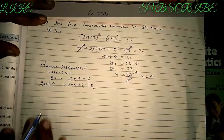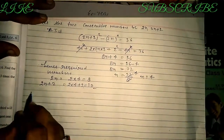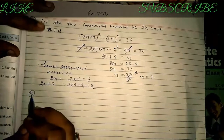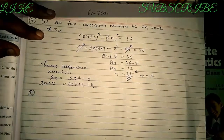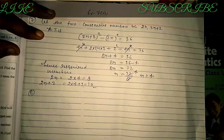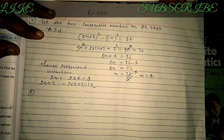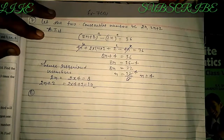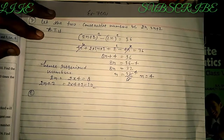Now question number 8: the denominator of a fraction is 3 more than the numerator. If 5 is added to both parts, the resulting fraction is equivalent to 4/5. Find the fraction.